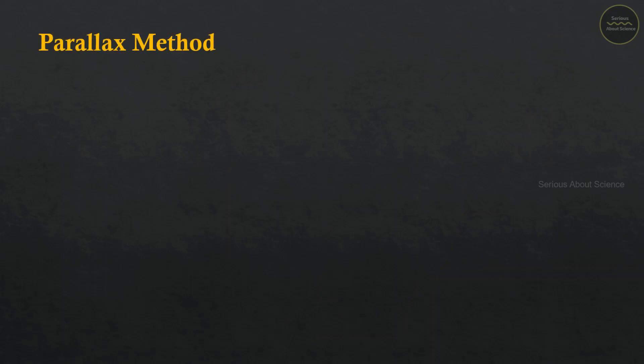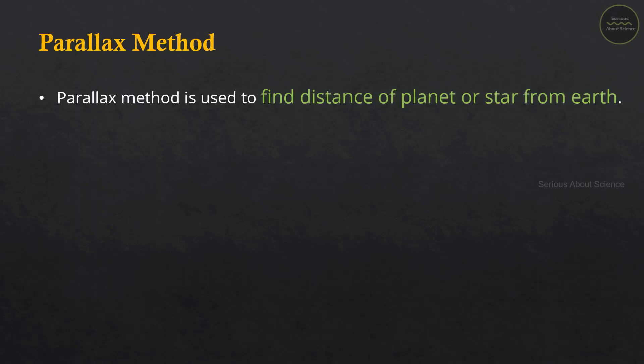Now we will discuss the Parallax method. The Parallax method is an indirect method used to measure large distances. This method is used to find the distance of a planet or star from Earth.